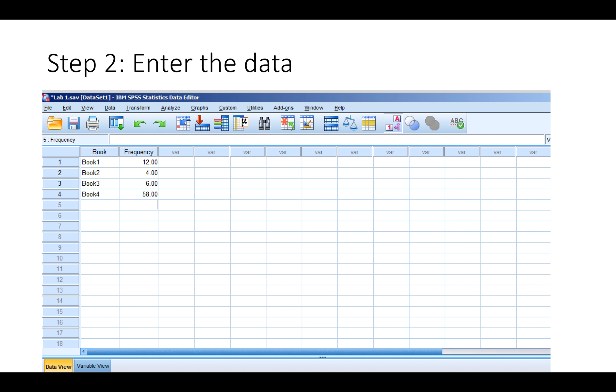Next we are going to go to the data view tab at the bottom. We are going to put the number or frequency of each value for each of the books. So if there were 12 votes for book 1 we put 12 under row of book 1 and the frequency column. And if there's 4 for book 2 we're going to put it here, 6 for book 3, and 58 for book 4.